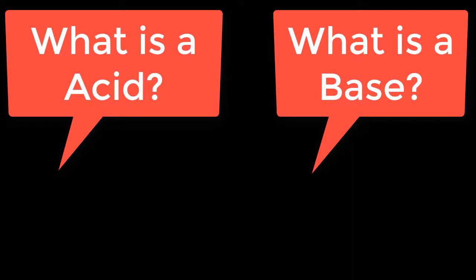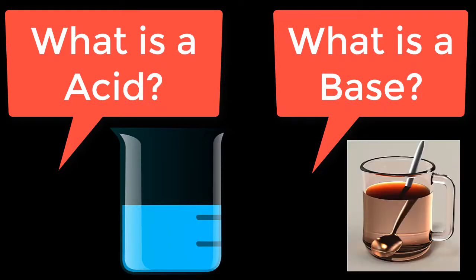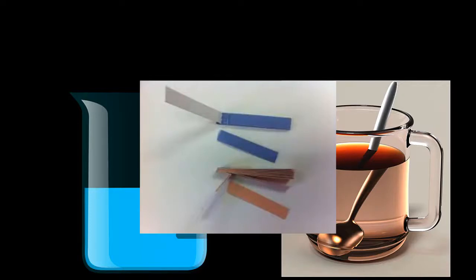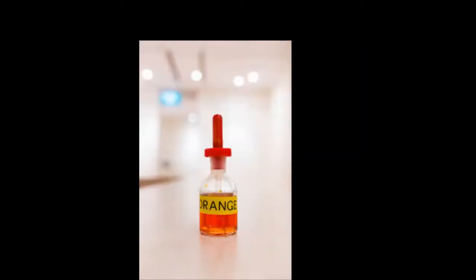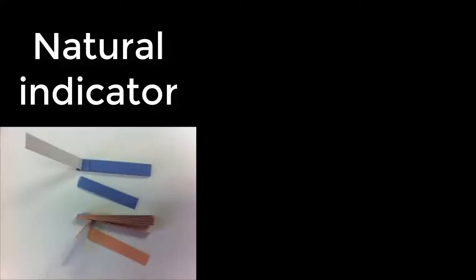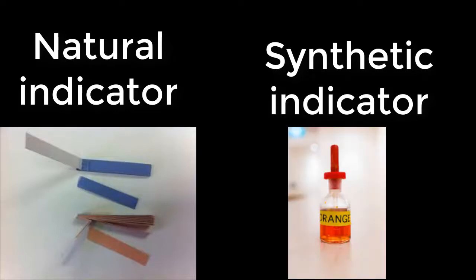So we have learned what is acid and what is base. Now, how can we tell which is acid and which is base? To tell this, there is an indicator. The name itself indicates — it is indicating something, indicating acid and indicating a base. There are two types of indicators: natural indicators and synthetic indicators. Litmus is the natural indicator, and synthetic indicators include phenolphthalein and methyl orange, which are prepared by chemical processes.